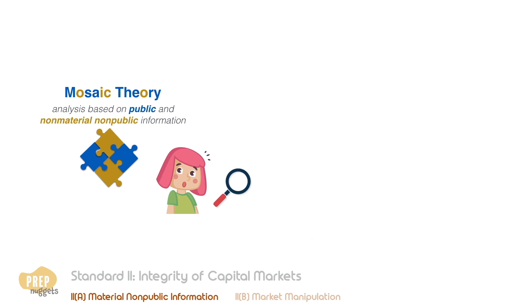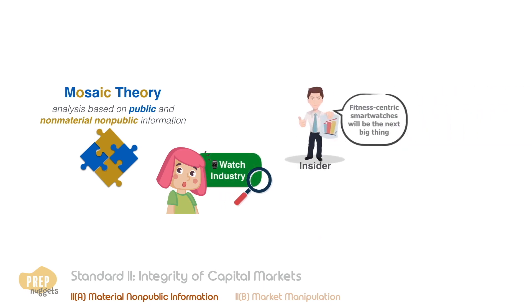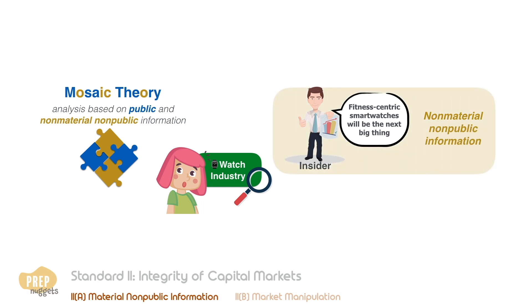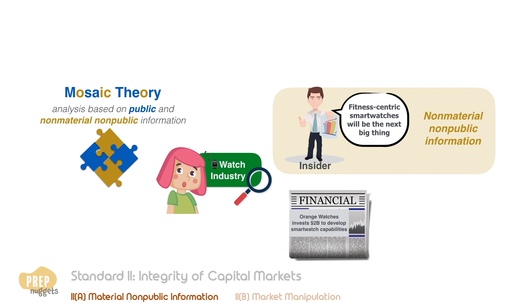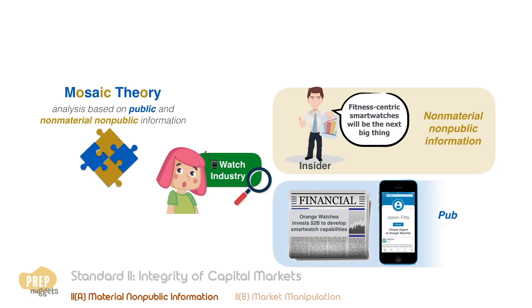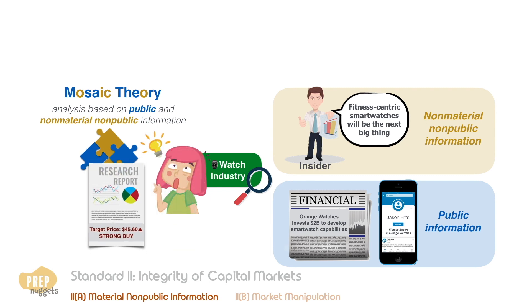For example, you have been analysing the watch industry and you interviewed several insiders on market trends. You learn from the insiders that the market is beginning to lean towards fitness-centric smartwatches, which can be considered non-material, non-public information. Your research from news coverage also uncovered that Orange Watches has made heavy investment in smartwatch technologies and has recently hired several fitness experts. You reach a conclusion that Orange Watches stock is grossly undervalued and is a strong buy. This is an example of mosaic theory.